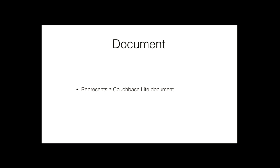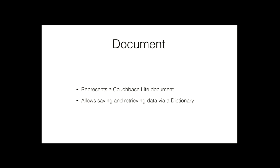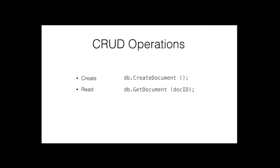Documents allow saving and retrieving through a dictionary — if you're coming at it through the .NET APIs, it's like a hash map in other languages. There are a bunch of APIs on the database to work with documents: create a document, get a document, update, delete. For updating, you can put properties directly — props would be a dictionary — or you can use the update method.